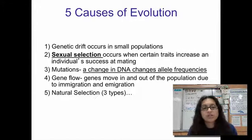So genetic drift, sexual selection, mutations, gene flow, and natural selection. So those are the five things that cause evolution.